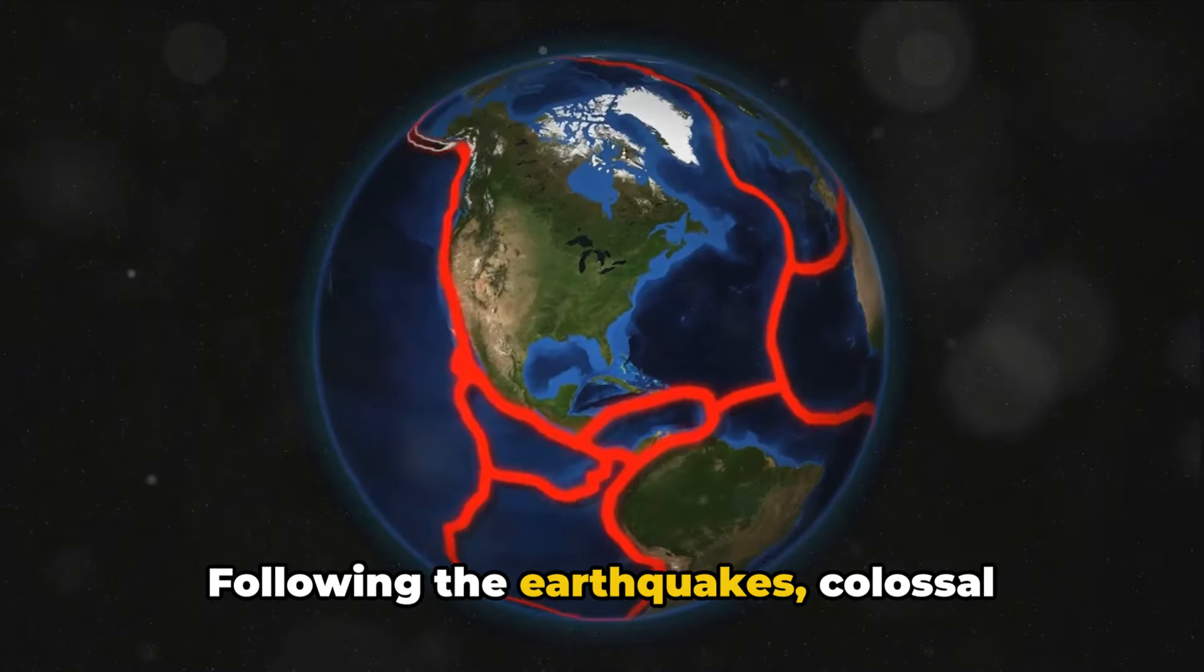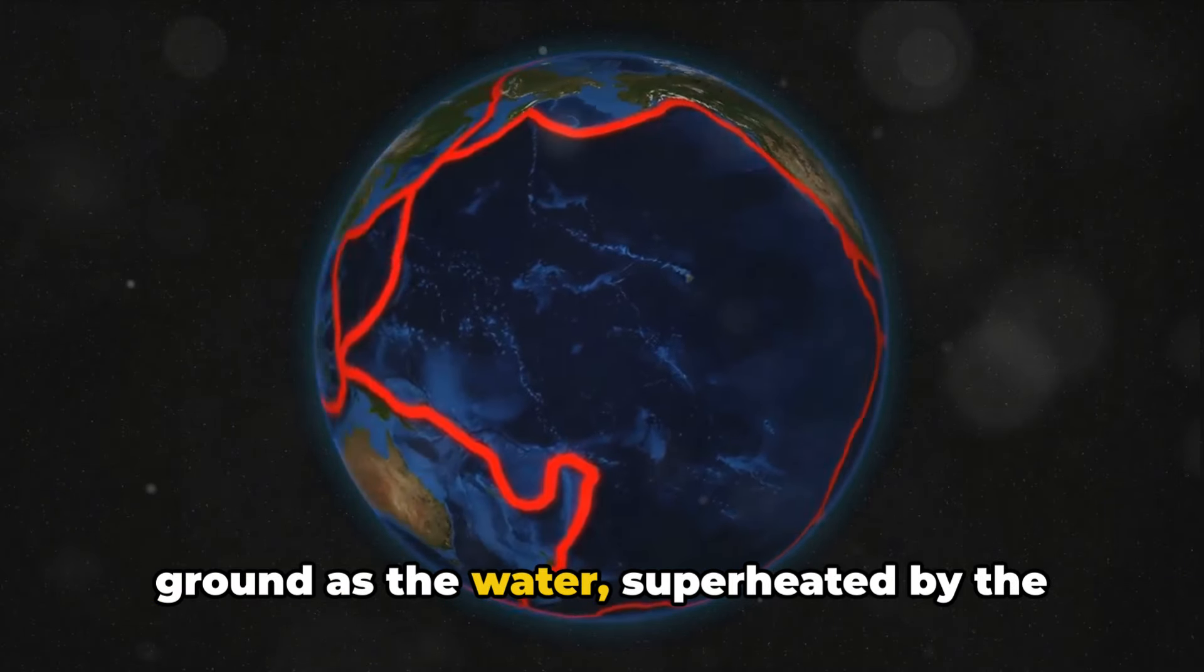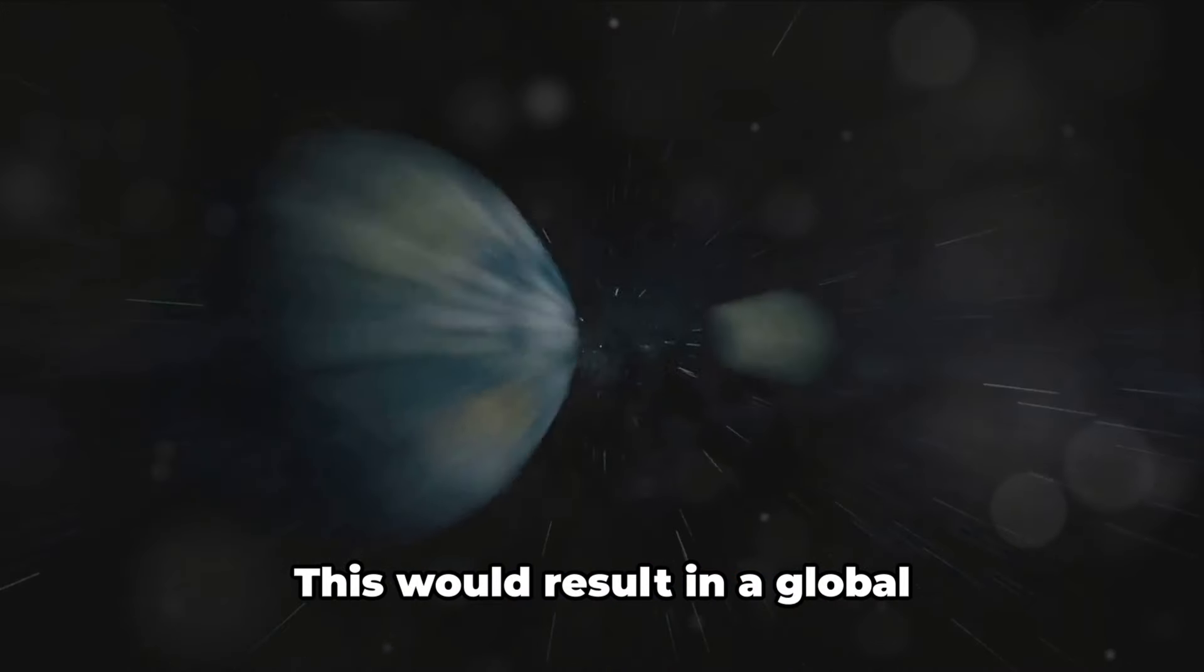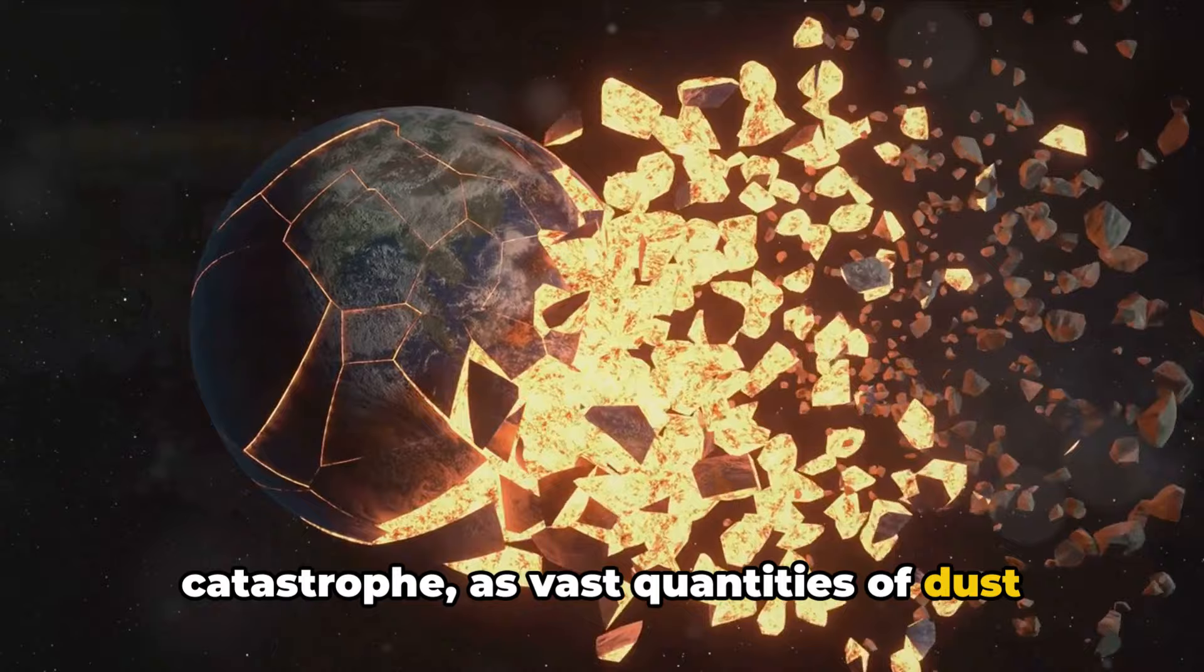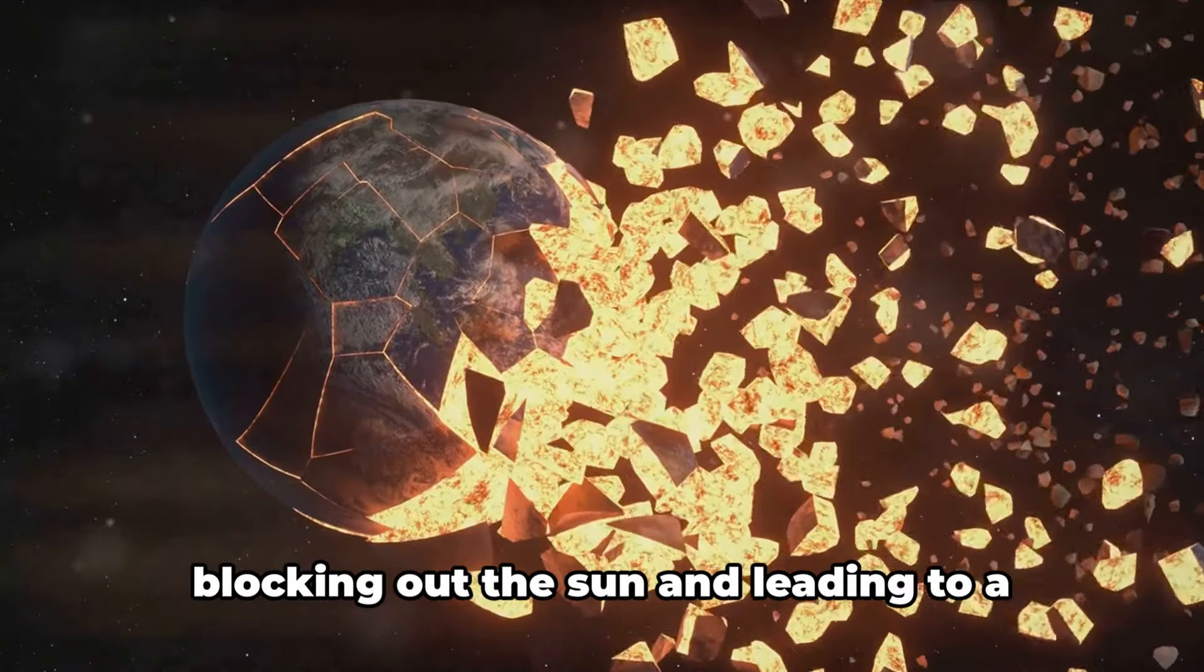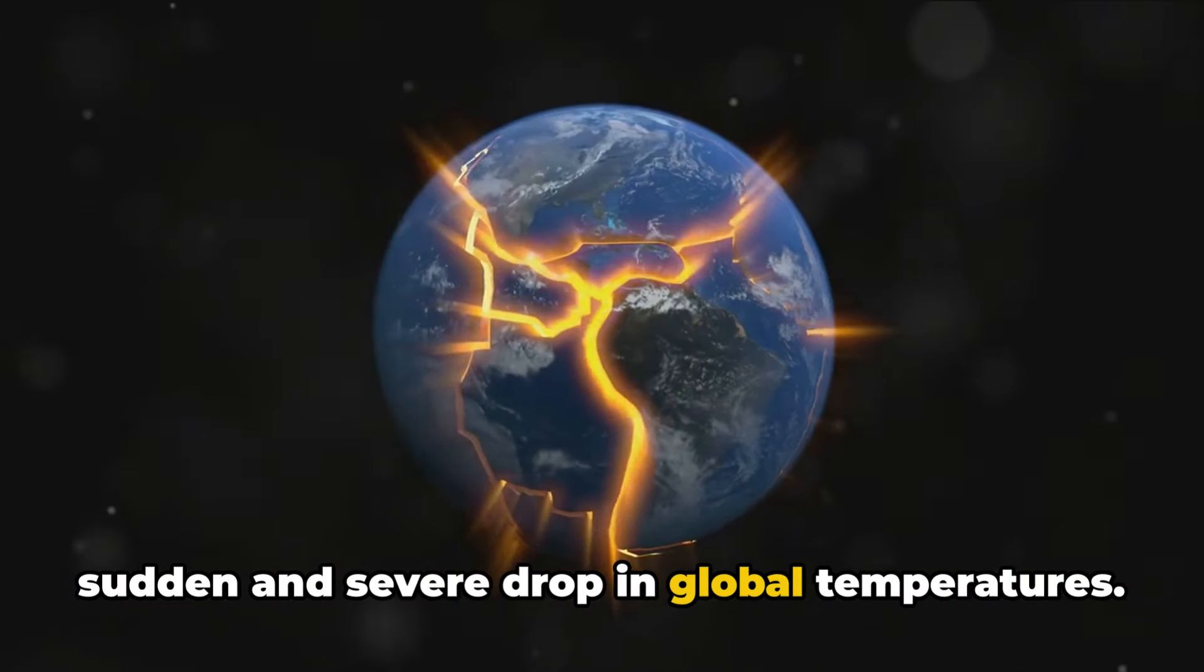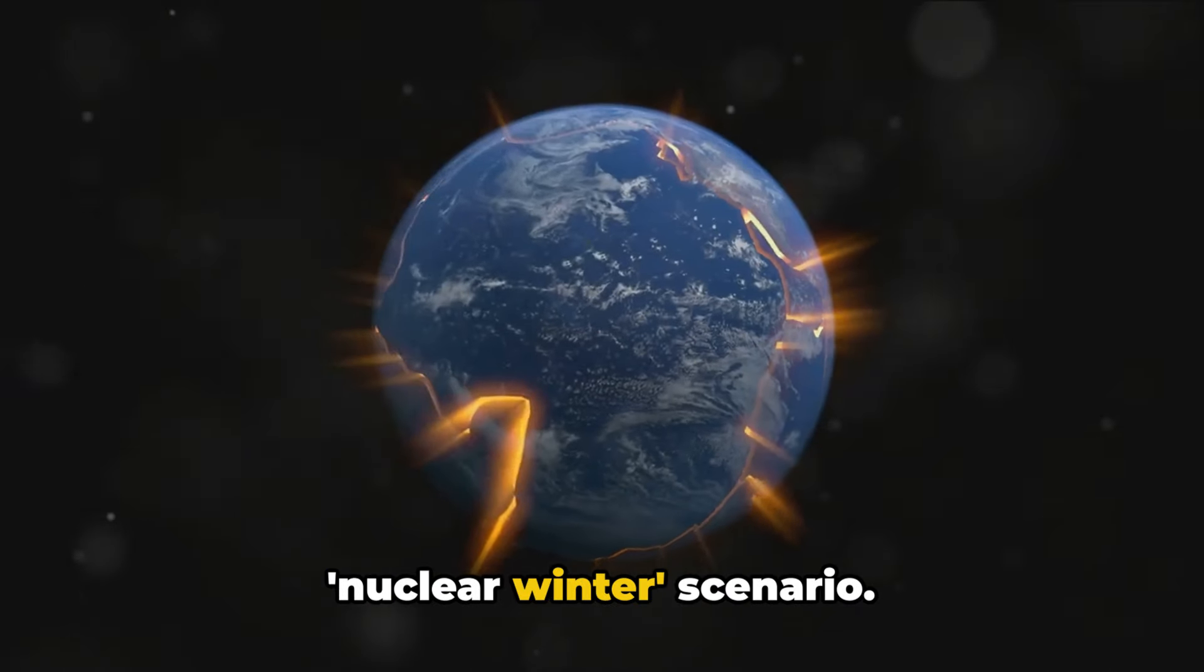Following the earthquakes, colossal plumes of steam would erupt from the ground as the water, superheated by the core's intense heat, rushes to the surface. This would result in a global catastrophe as vast quantities of dust and ash are thrown into the atmosphere, blocking out the sun and leading to a sudden and severe drop in global temperatures. A scenario we could refer to as a nuclear winter scenario.